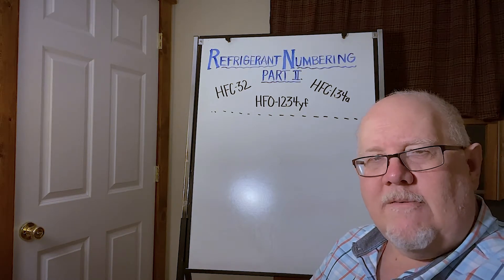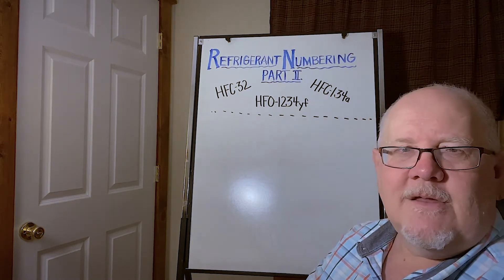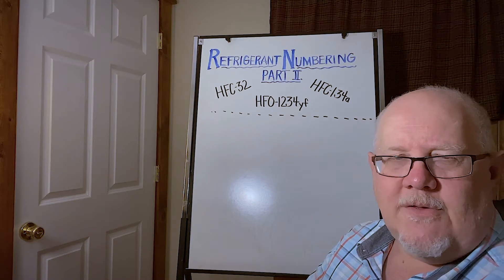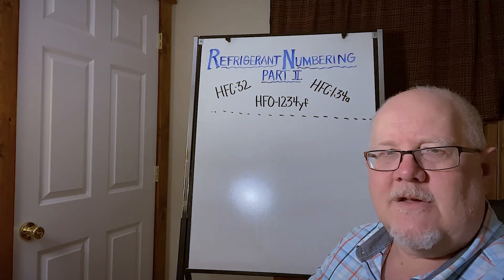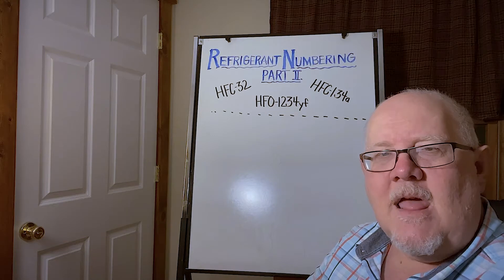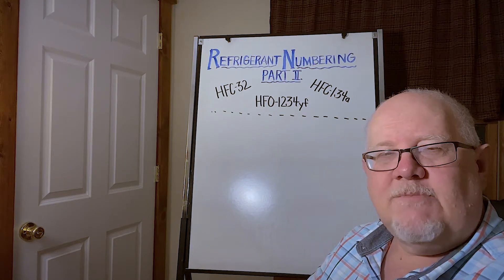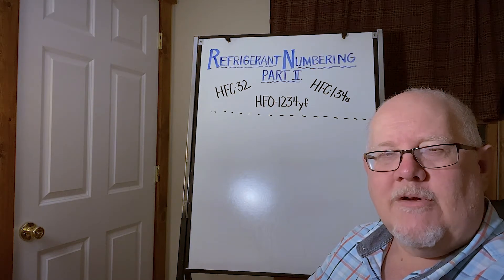When we start blending refrigerants together and they get submitted through the ASHRAE Standard 34 committee, they get assigned a name eventually as they go through that approval process. And those numbers, those blend numbers are what we call the 400 series.